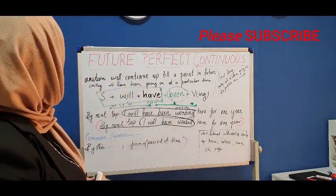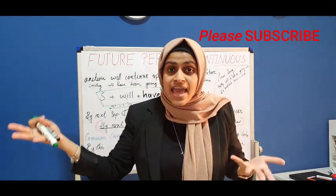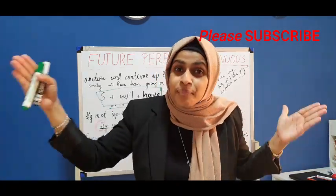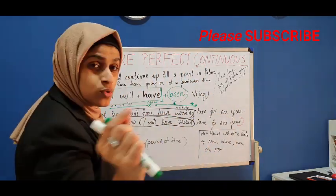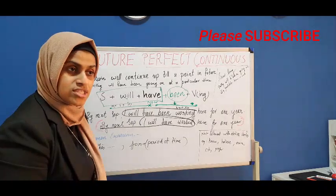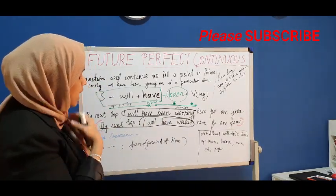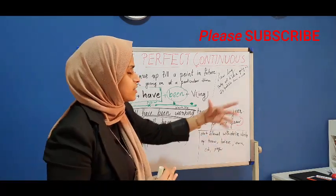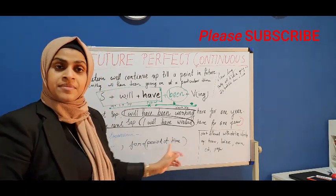Now let's get into it. We can imagine going to the future — the action is very important. It will continue for a particular period of time. We use time expressions like 'by next September,' 'by this Saturday,' 'by this Monday,' 'by this month,' 'by next...' — combined with a duration like 'for one year' or 'for six years.' That means: for plus a period of time.